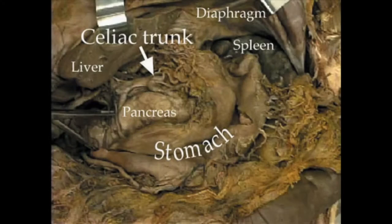This structure supplies very important organs of our bodies such as the stomach, duodenum, pancreas, gallbladder, and liver. Now let's take a tour over to the cadaver and take a look at the celiac trunk.